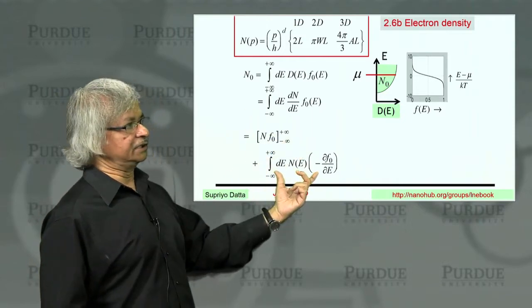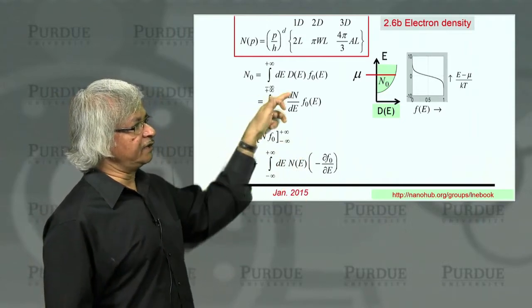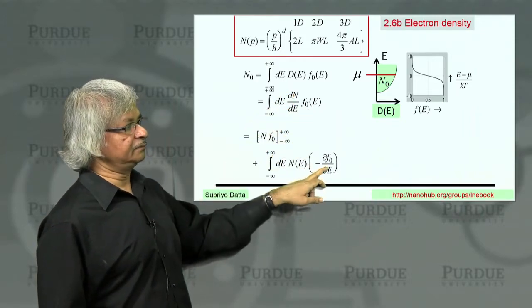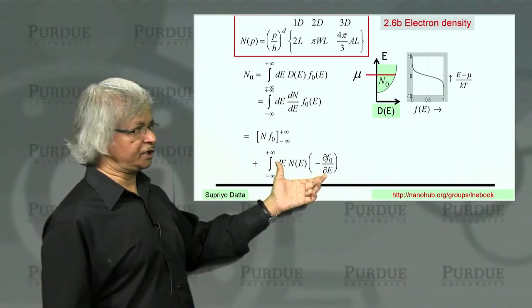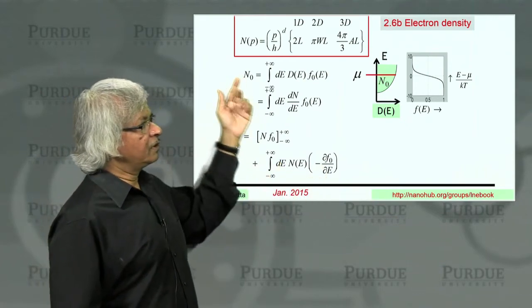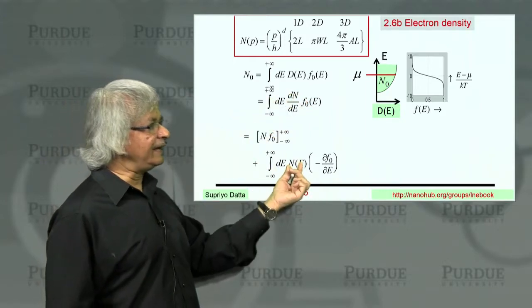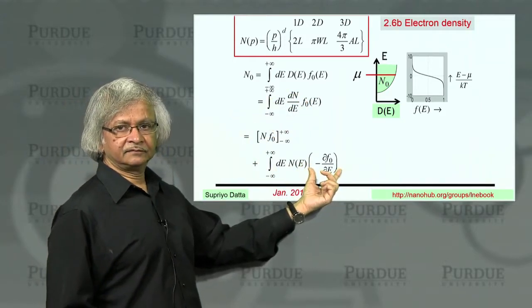And then you have the other term where you see the derivative is now gone from N and instead it appears on the F0 and there's a minus sign associated with it. So here we had dN dE times F0. Now we have N times minus dF dE.